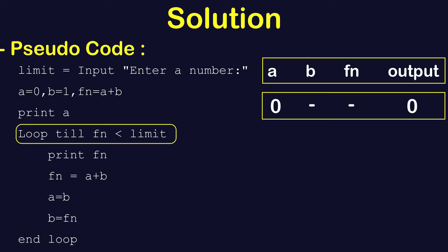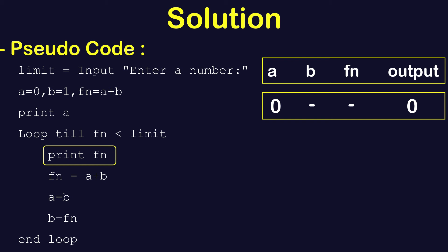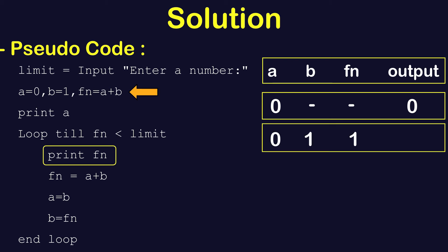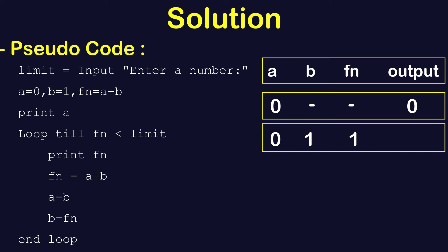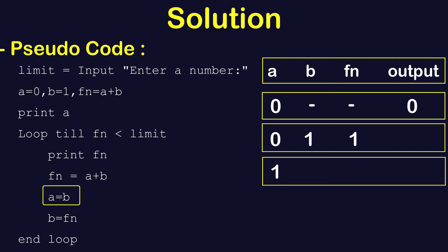Now we are putting a loop where, unless 'fn' reaches the limit, it should keep repeating the process. The first thing we do is print the value of 'fn'. Since fn is initialized as a plus b — that is zero plus one — fn will have value one, so the output is now zero, one. The next thing is we need to change the value of 'fn' by computing a plus b again, then we change the value of 'a' by assigning it the value of 'b', and 'b' needs to have the newer value, which is the sum stored in 'fn'.